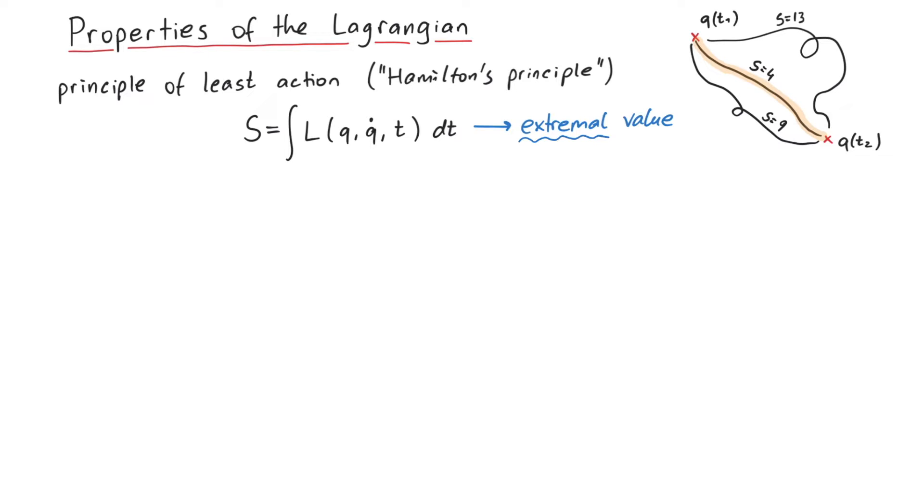So in this video, we will talk about some properties of the Lagrangian function. First, additivity. If we have two systems that do not interact at all with each other, we can consider the whole system just by taking the sum of both individual Lagrangians.